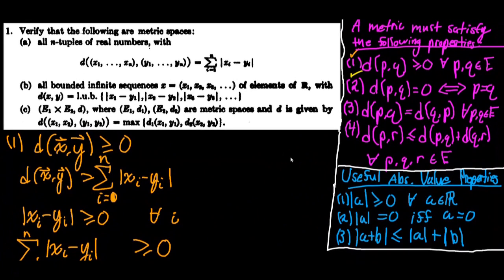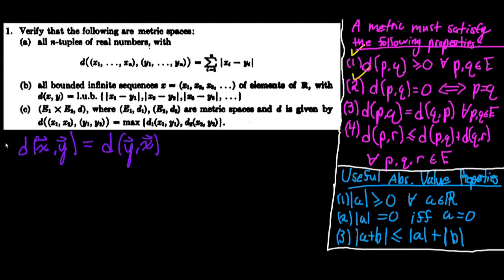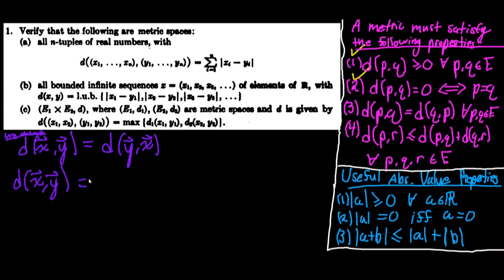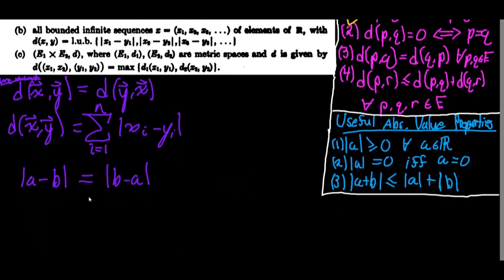Let's clear the board to prove property 3, symmetry. We want to prove that the distance between x and y equals the distance between y and x. We know the distance of x and y equals the sum from i equals 1 to n of the absolute value of xi minus yi. We use the fact that the absolute value of a minus b equals the absolute value of b minus a.